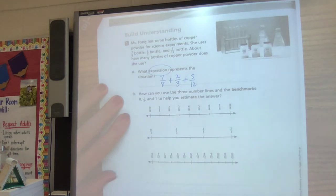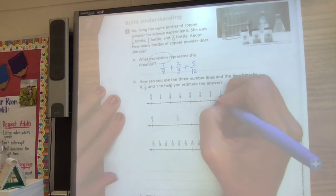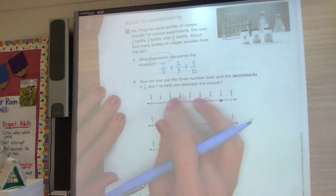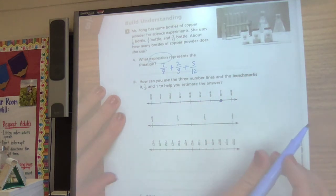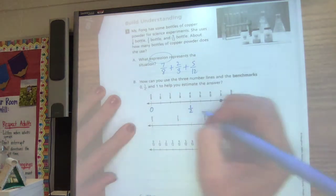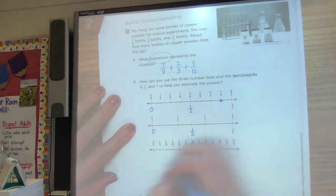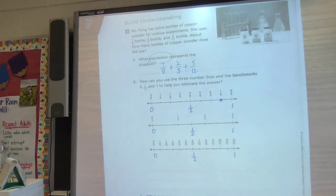Okay. How can you use the three number lines and the benchmarks, zero, half, and a whole, to help you estimate the answer? Okay. So I'm going to put seven eighths here on my number line. I think that it's, in my copy, you can't see it as good in your book. I'm sure you can see it better. I'm going to trace those. And now the whites have gone out in here too.